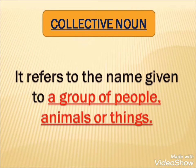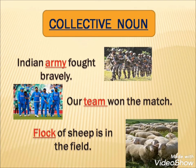Next is Collective Noun. It refers to the name given to a group of people, animals or things. Let's see some examples. 'Indian Army fought bravely.' Here, Army is a Collective Noun — Army is a group of soldiers. Next sentence: 'Our team won the match.' Here, team is a group of players, so team is a Collective Noun.